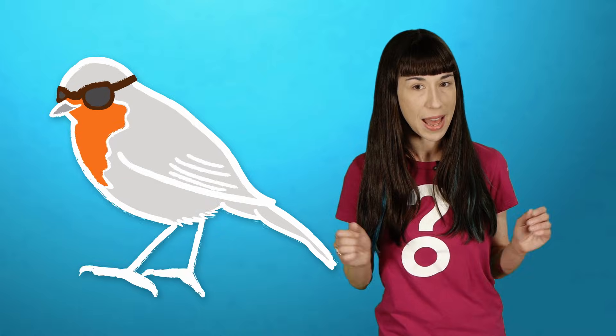Around 2010, researchers fit European robins with clear or frosted goggles, and found that the birds needed clear vision in their right eyes to navigate magnetically. Why not the left eye? No one knows.